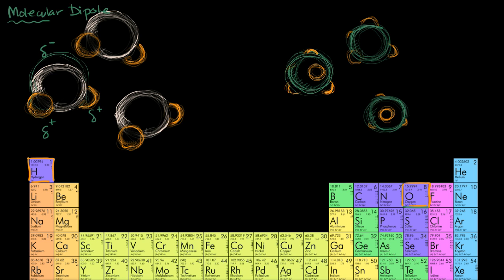We call it a molecular dipole because it's across the short space of an actual molecule. This should not be confused with a magnetic dipole, which we might also talk about in other videos. Now, in a water molecule, the dipole is a permanent dipole because we're not changing electronegativities here — the oxygen just likes to hog those electrons more. This is a permanent dipole, and because of this permanent dipole, water molecules are attracted to each other.